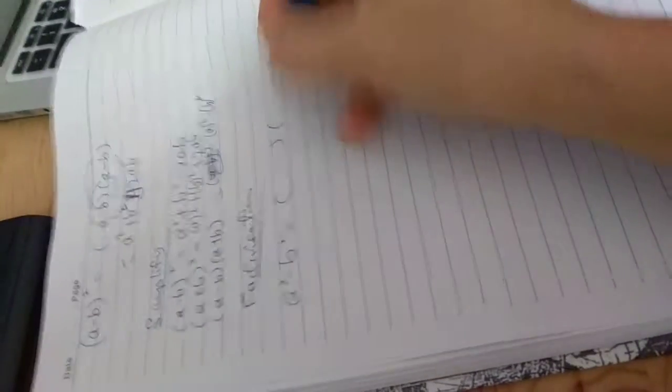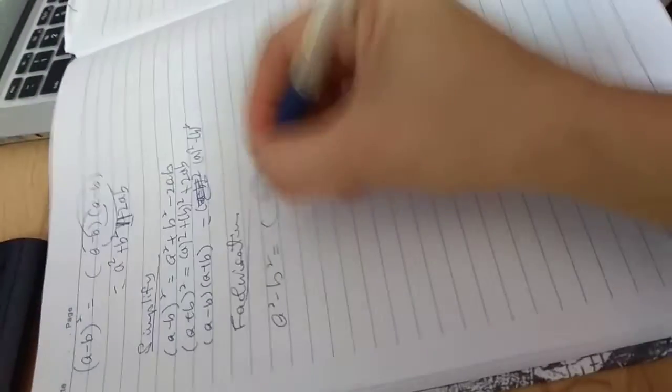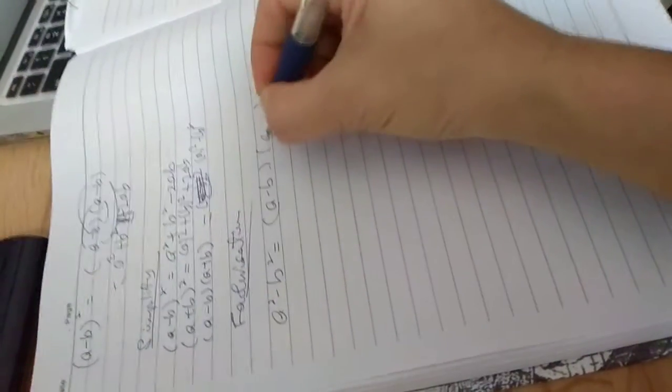a squared minus b squared will give you a minus b, a plus b, right?